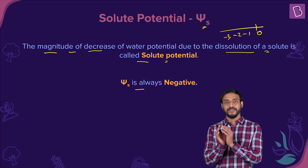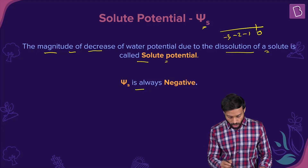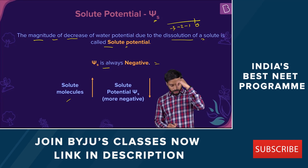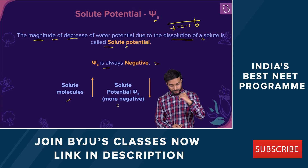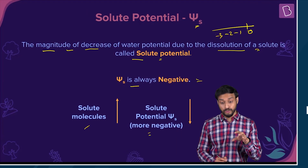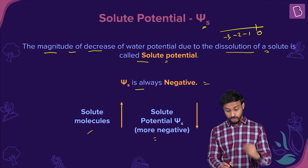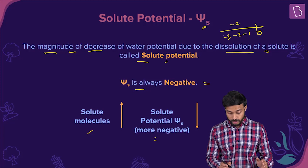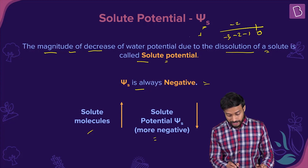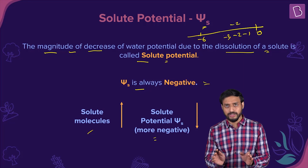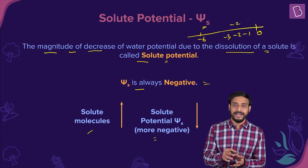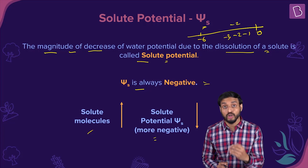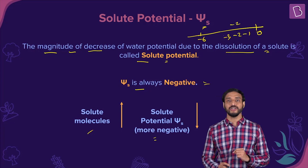Solute potential is always negative because it is reducing the water potential. More the amount of solute molecules, more negative will be the solute potential value. For example, if you add two molecules of solute the value may be minus two; if you add six more molecules it may be minus six. So more amount of solute you are adding, more negative will be the value, and more lowering of the water potential will happen.